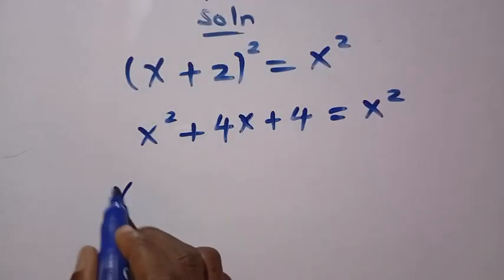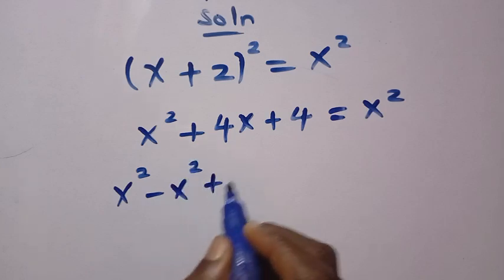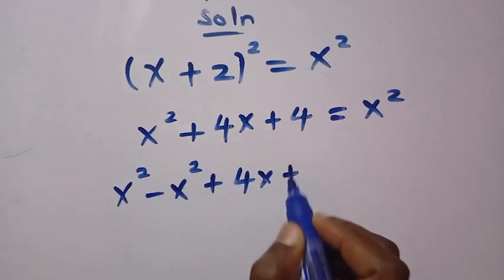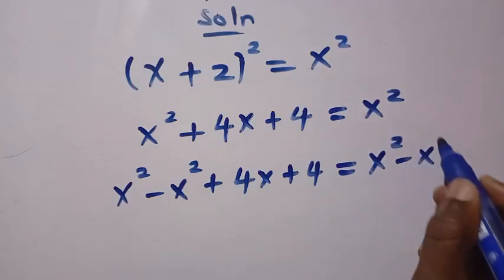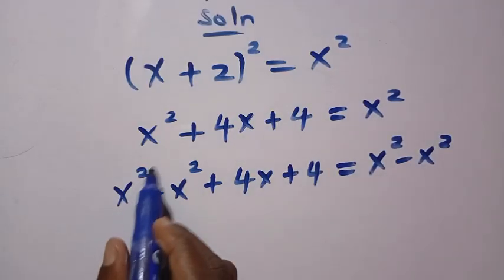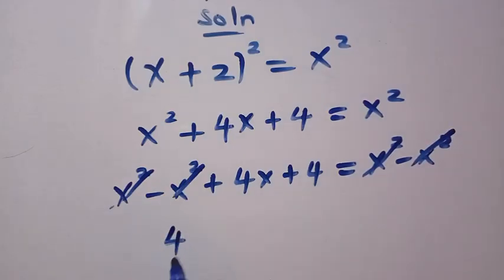And if I subtract x squared from both sides, we have x squared minus x squared plus 4x plus 4 equals x squared minus x squared. So, x squared cancel x squared here, and x squared also cancel x squared. Here we have 4x plus 4 equals 0.